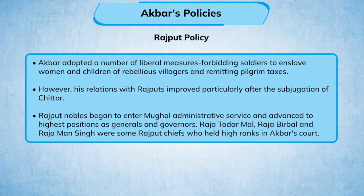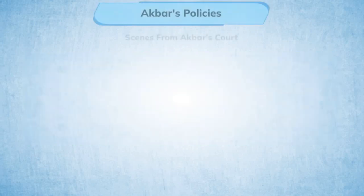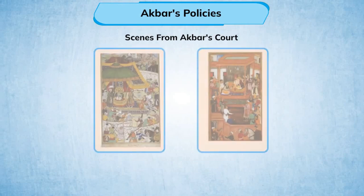His relations with the Rajputs improved particularly after the subjugation of Chittor. Rajput nobles began to enter Mughal administrative services and advanced to the highest positions as generals and governors. Raja Todar Mal, Raja Birbal, and Raja Man Singh were some Rajput chiefs who held high ranks in Akbar's court.